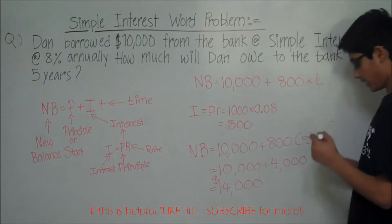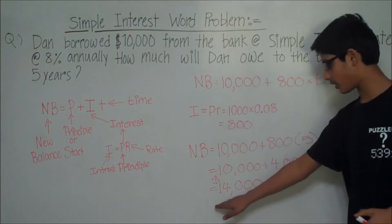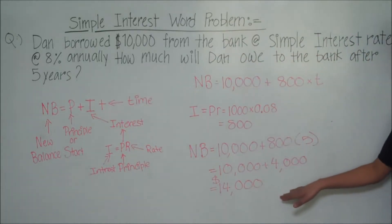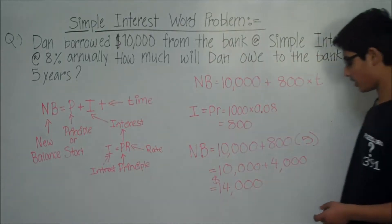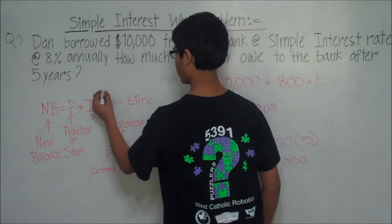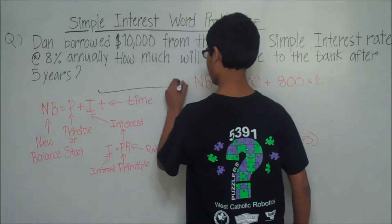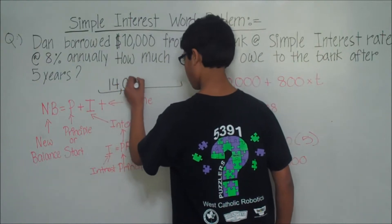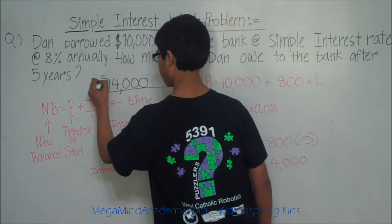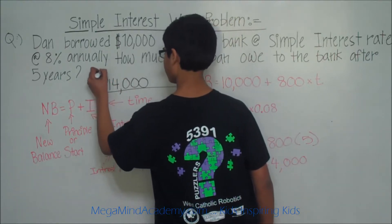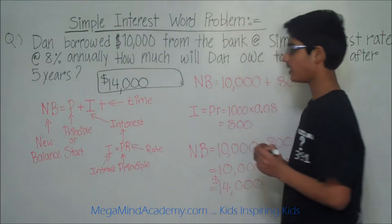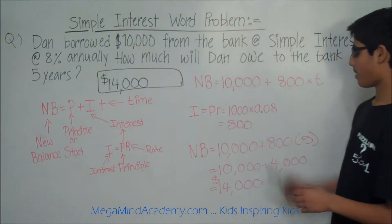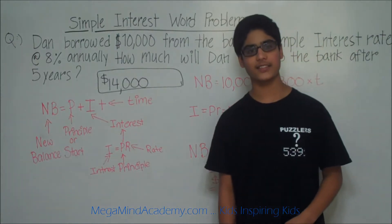So, Dan's balance after 5 years is $14,000. The answer to this problem is $14,000. Today we learned about simple interest word problems. Thank you for watching this video.